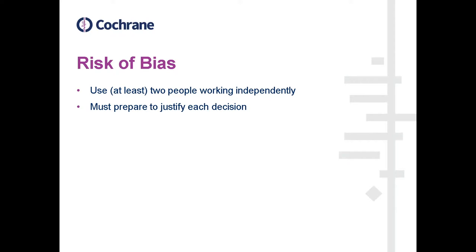It's really important that every decision made in a risk of bias assessment is justified. It's not enough to say the risk of bias for sequence generation was unclear and leave it at that. You need to be very specific — for example, it was unclear because all they said in the paper was 'participants were randomized' and they did not provide any more detail than that.